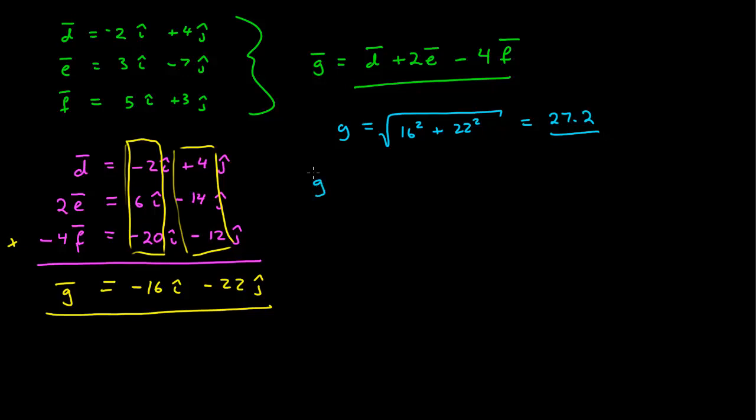Now, let's say if I asked for the unit vector, what would that be? Well, from before, we learned that the unit vector can be calculated by the original vector divided by the magnitude. And so if we do that calculation, we have 1 over 27.2 times the original vector, negative 16 i-hat minus 22 j-hat. So if I multiply through and then divide both terms by 27.2, I get negative 0.588 i-hat minus 0.809 j-hat. So this is now the unit vector that points in the direction of the vector g.